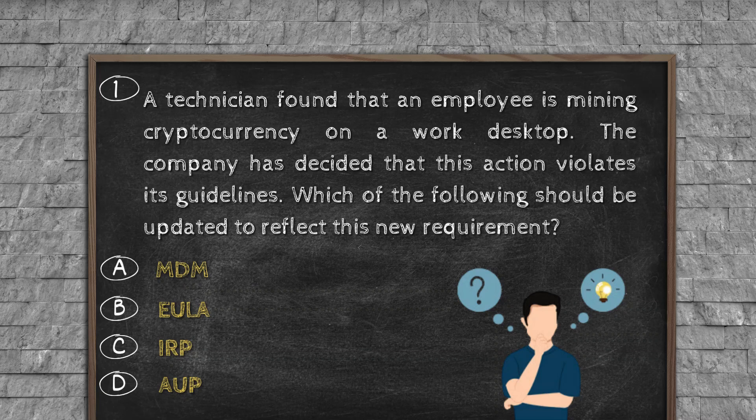Question number one. A technician found that an employee is mining cryptocurrency on a work desktop. The company has decided that this action violates its guidelines. Which of the following should be updated to reflect this new requirement? Option A, MDM. Option B, EULA. Option C, IRP. Option D, AUP.